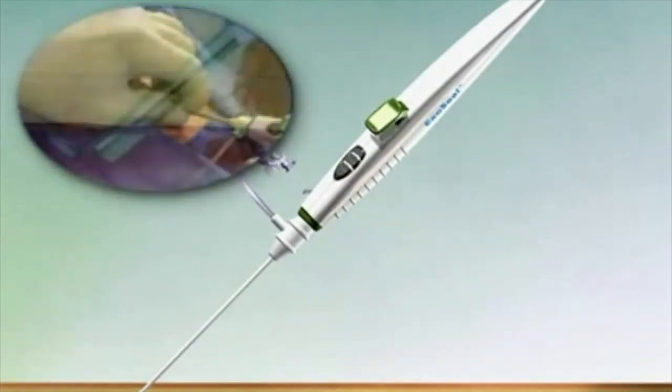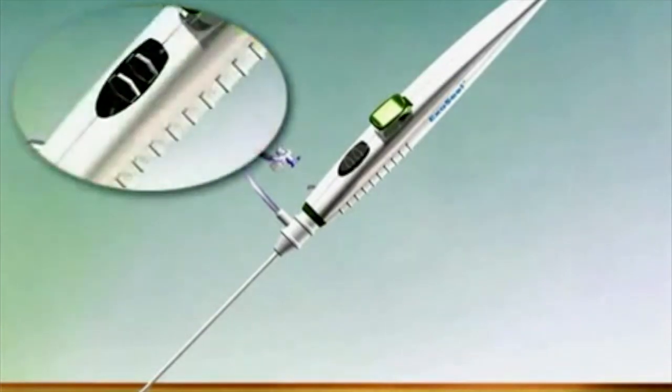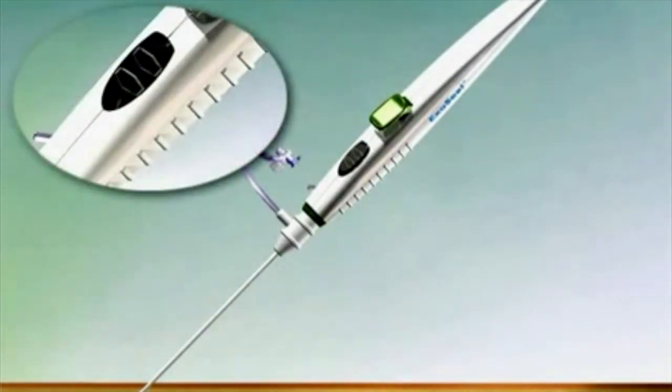Continue to slowly retract the ExoSeal vascular closure device and the femoral sheath until the graphics pattern in the indicator window changes from black and white to solid black.